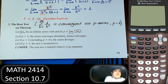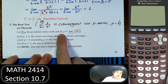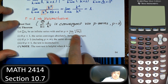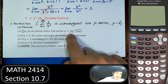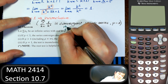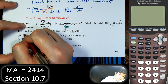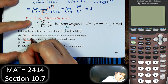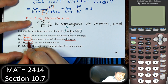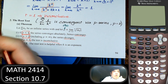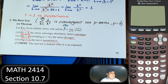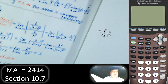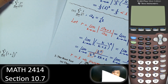The root test is similar to the ratio test. Instead of taking the ratio of consecutive terms, we take the k-th root of the absolute value of a(k) as k goes to infinity, calling this rho. If rho is less than 1 it's convergent; greater than 1 it diverges; equal to 1 it's inconclusive — exactly like the ratio test.